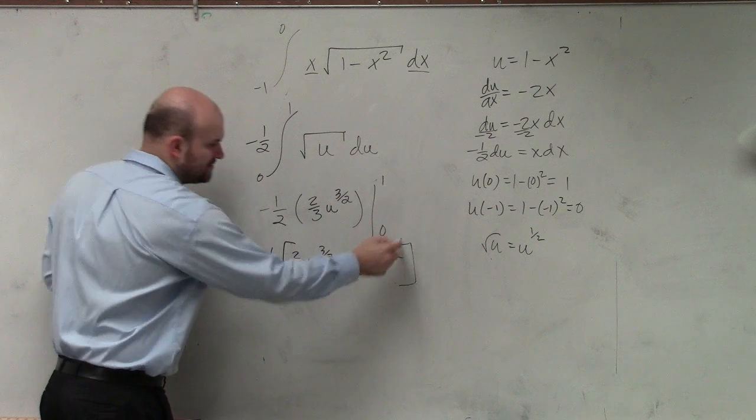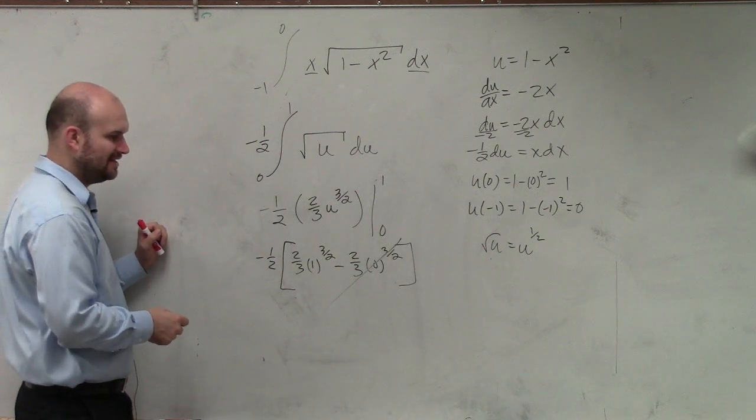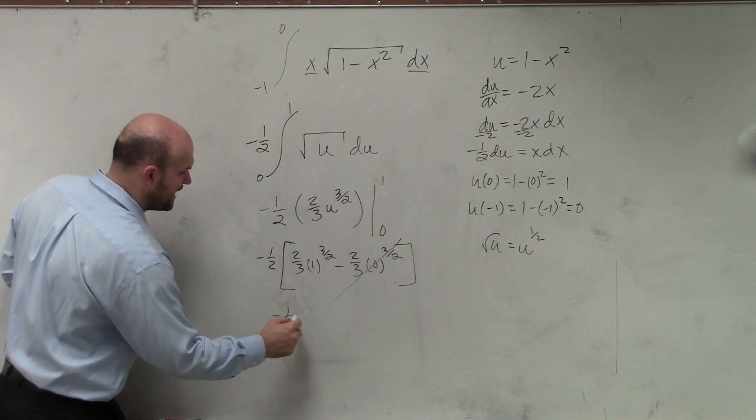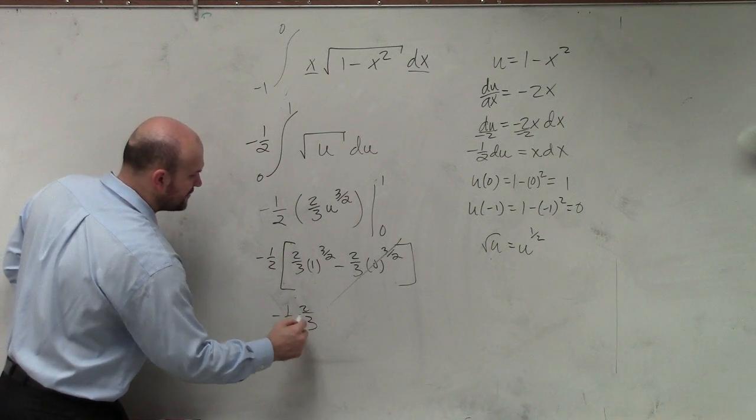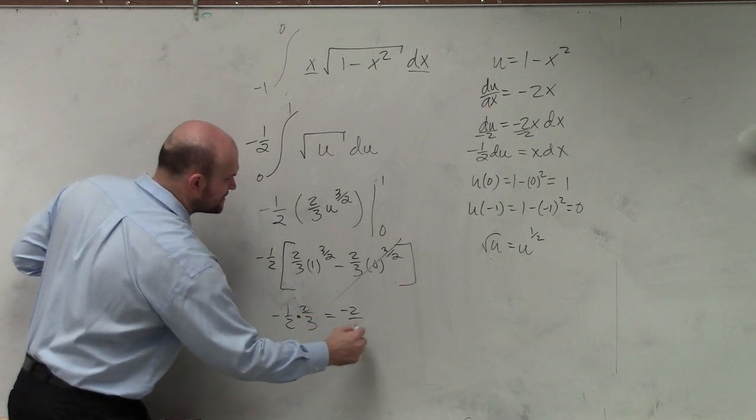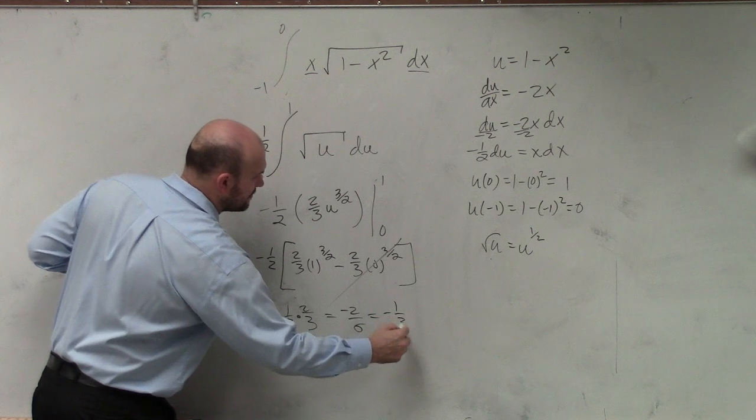Well, we love zeros, because that's not going to be anything. And then this, 1 to anything, is just going to be 1. So you're left with negative 1/2 times 2/3, which is equal to negative 2/6, which is equal to negative 1/3.